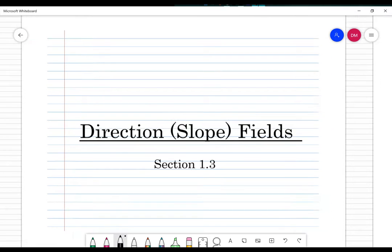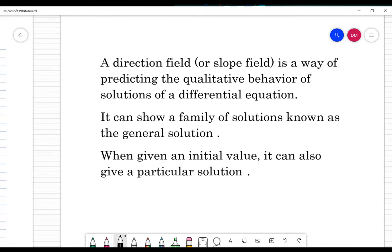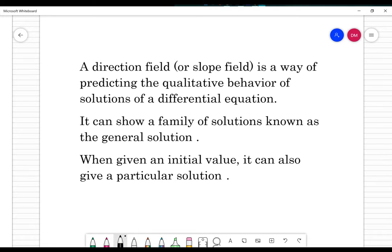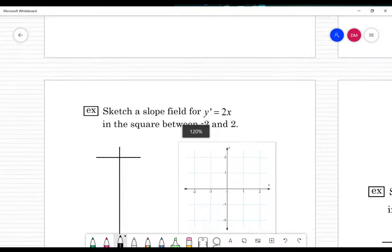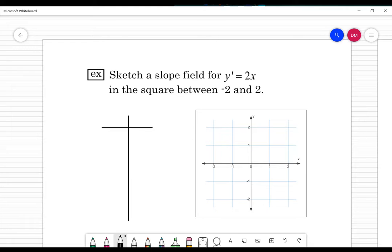So what is a slope field? Also called a direction field, it's a way of predicting the behavior of solutions in a differential equation. This is the conceptual piece - you're looking at a family of solutions, the general solution. When you do have an initial value, that gives you a particular solution. It's just a graphic way of viewing our solution system.